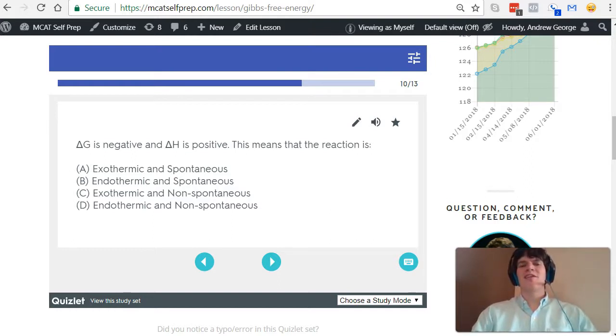The way to remember these two apart is to think of G as in go. If G is negative, the reaction will go spontaneously, whereas H is related to heat, whether heat will be taken in or whether heat will be released.